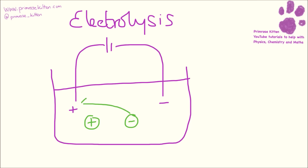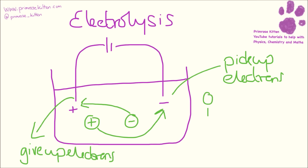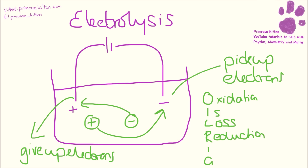In electrolysis, you are going to get the negative ions going towards the positive electrode, and the positive ions going towards the negative electrode. At the negative electrode, the positive ions are going to pick up electrons. At the positive electrode, the negative ions are going to give up electrons. And we can think about our OIL RIG: Oxidation Is Loss of electrons, Reduction Is Gain of electrons.